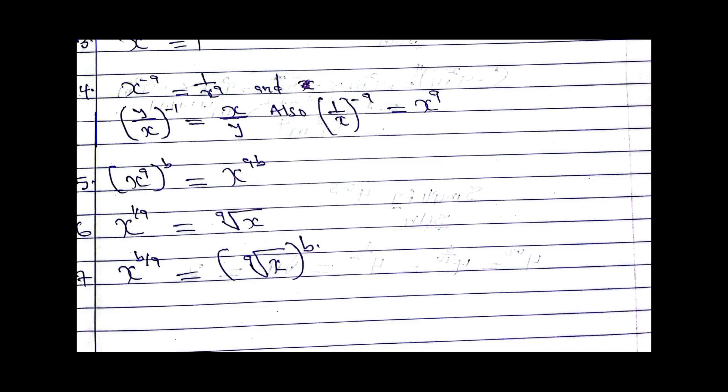Law number six: x power one over a equals the a-th root of x. For example, x power one over two is simply the square root of x. When we have x power one over three, we write the square root sign with x inside and place the three at the top of the square root symbol.